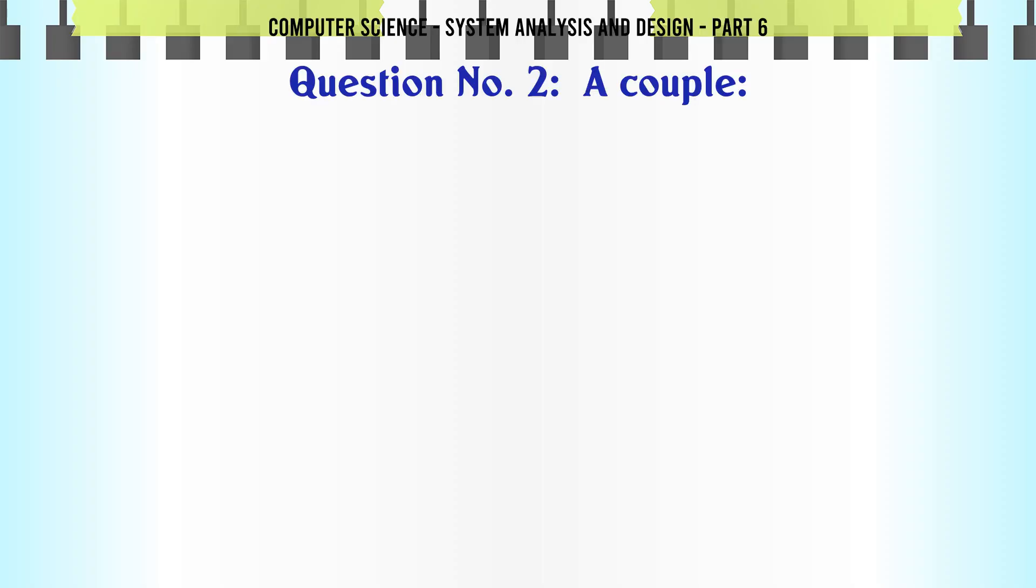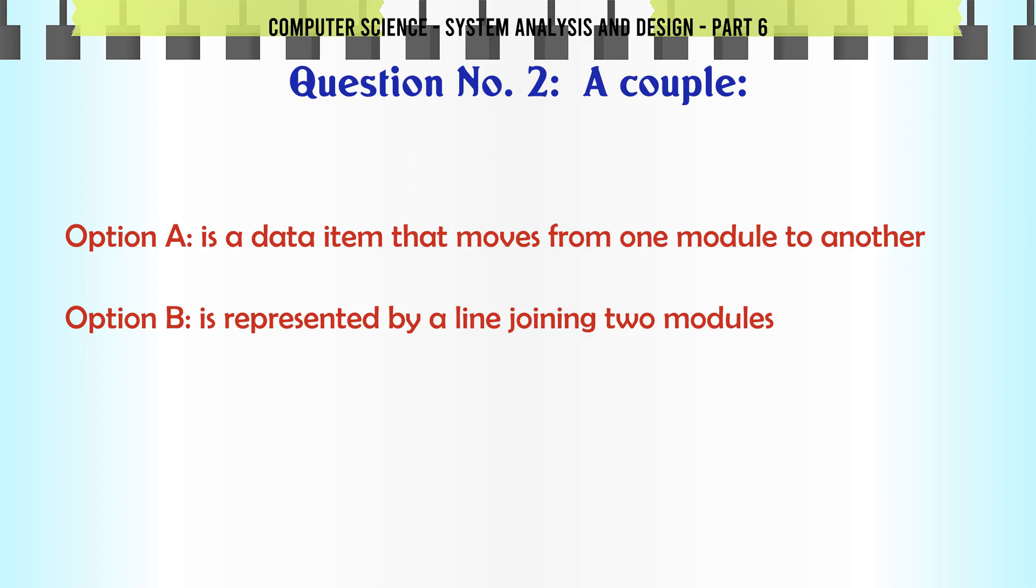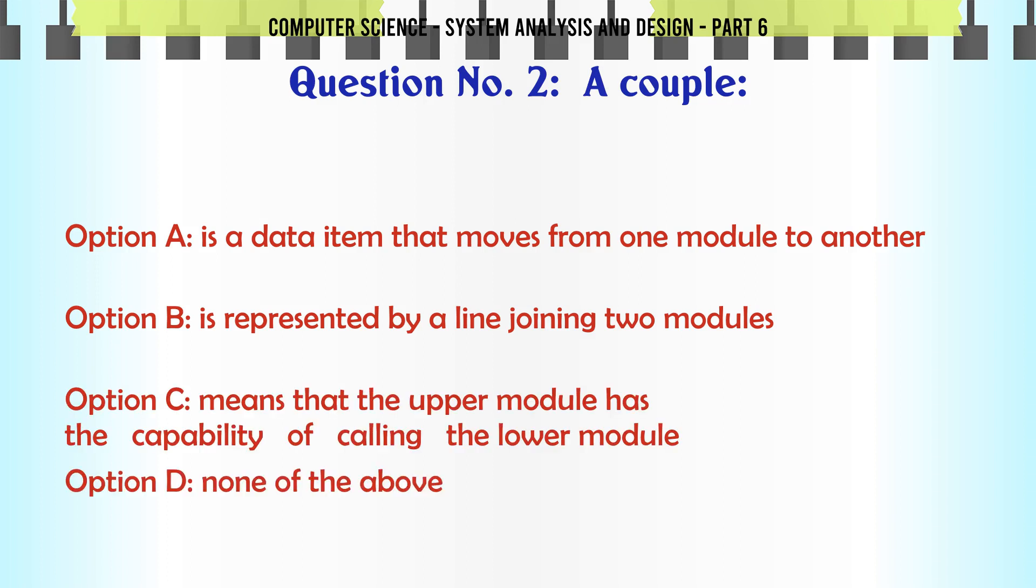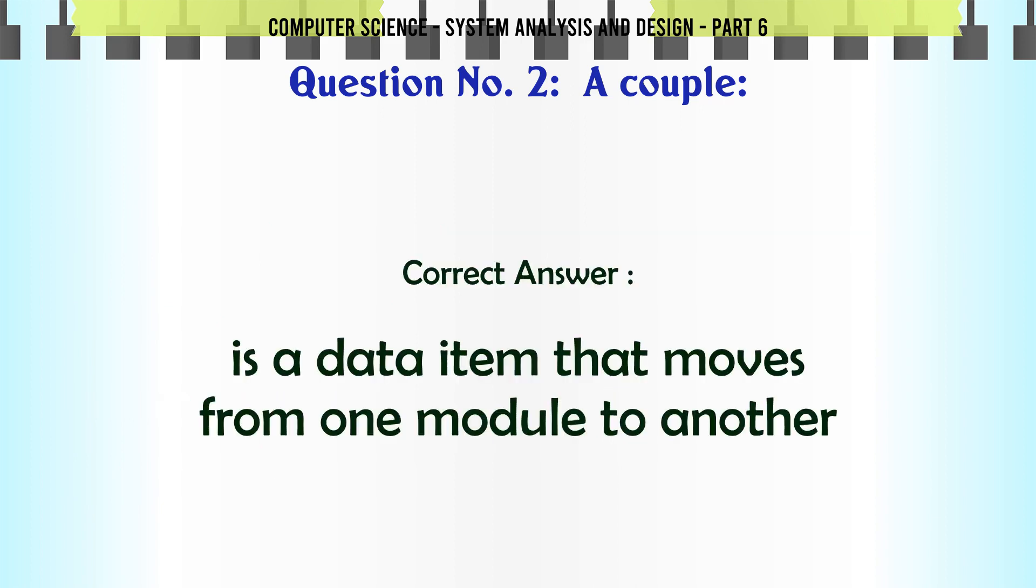A couple: A. Is a data item that moves from one module to another, B. Is represented by a line joining two modules, C. Means that the upper module has the capability of calling the lower module, D. None of the above. The correct answer is: Is a data item that moves from one module to another.